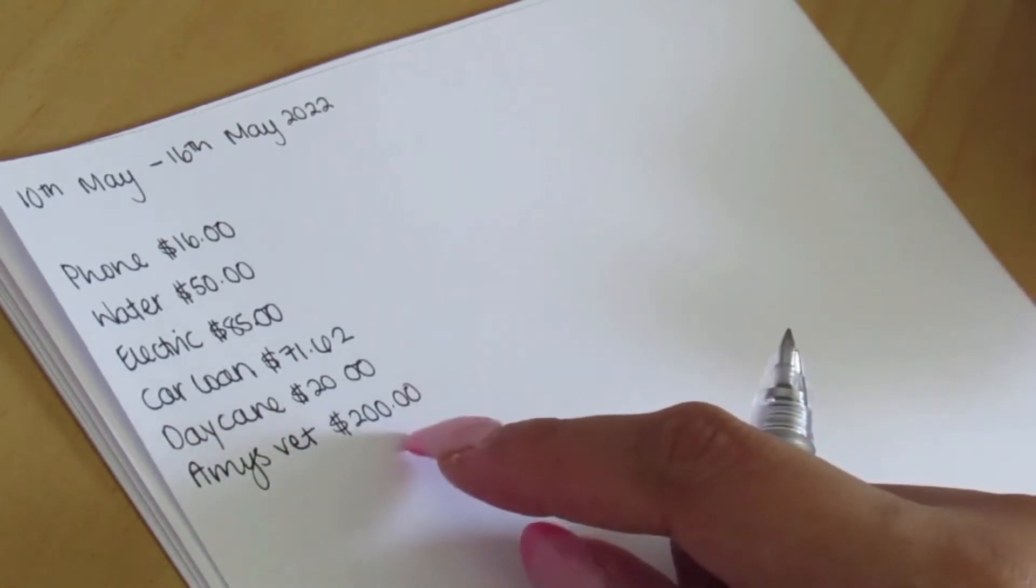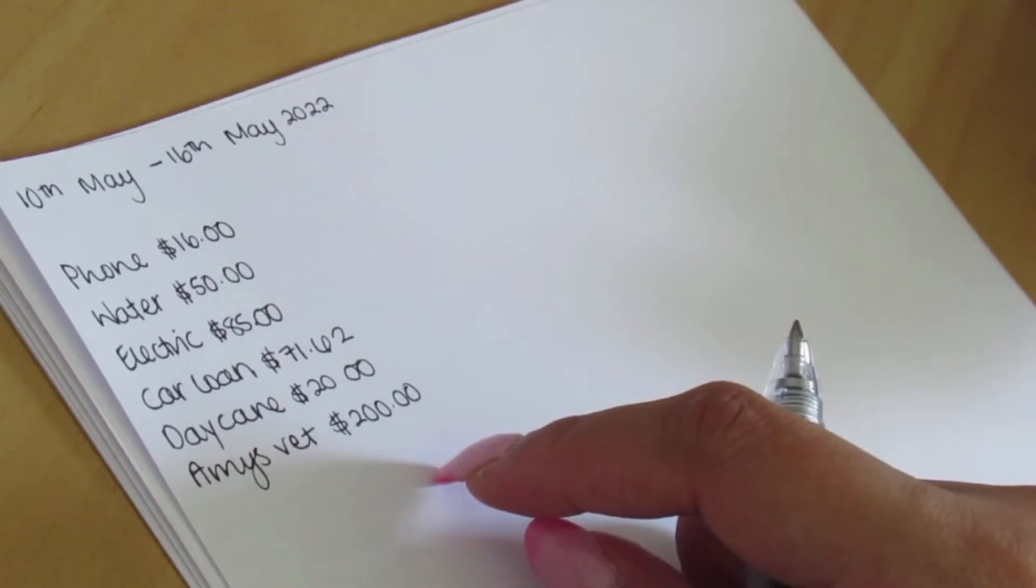This vet appointment coming up is going to be for his last set of injections, as well as I'll need to get some flea treatment and worming tablets or something for him to do that once every month or so. So $200 is going to be the budget for that.